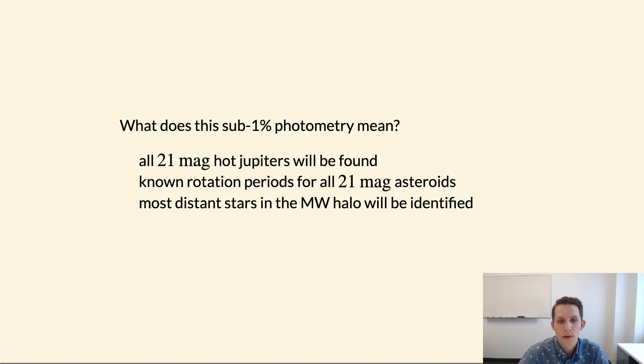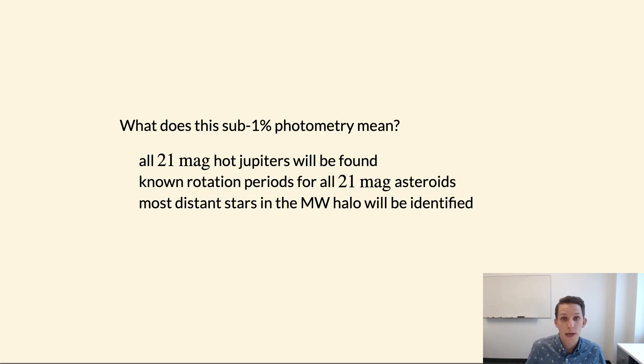What does it mean to have 1 percent photometry for these sources? For example, every single hot Jupiter around a 21st magnitude star or brighter will be found by the Rubin Observatory. Every asteroid that's brighter than 21st magnitude will have a very accurate rotation period measured. The most distant stars in the Milky Way halo are going to be identified by the variability light curves from the Rubin Observatory. So these are just a few examples of the exciting things that are going to be possible over the next several years.